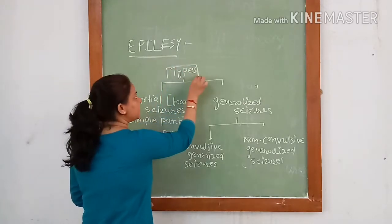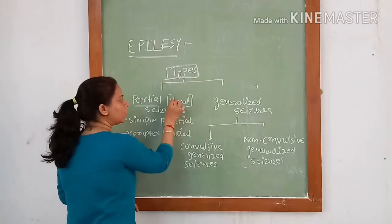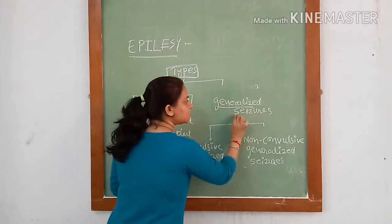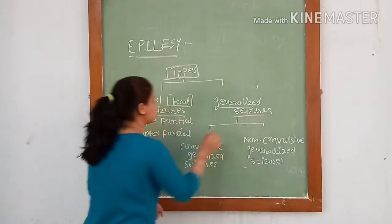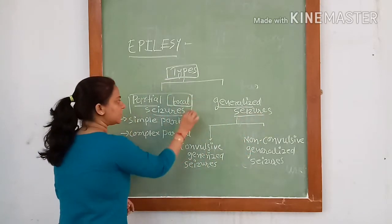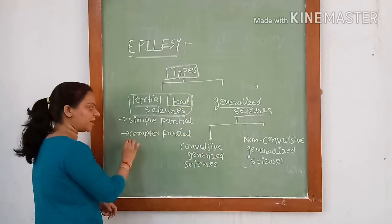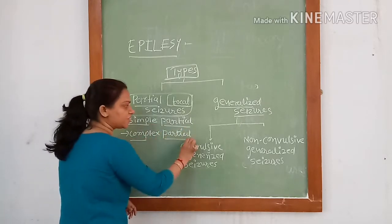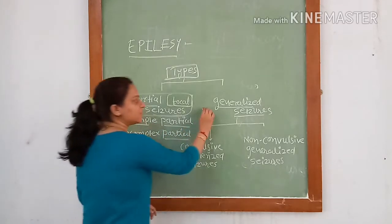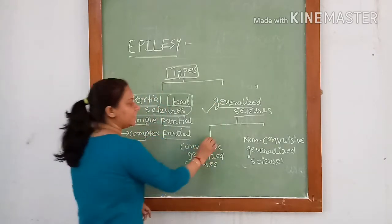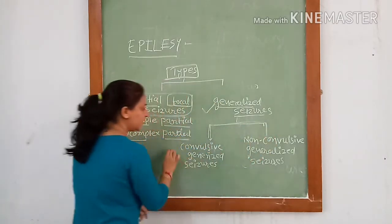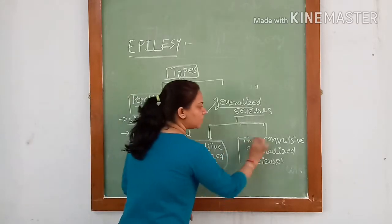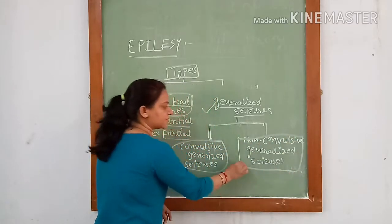The main types of epilepsy are partial or focal seizures and generalized seizures. Partial focal seizures are of two types: simple partial seizures and complex partial seizures. Generalized seizures are again divided into two varieties: convulsive generalized seizures and non-convulsive generalized seizures.